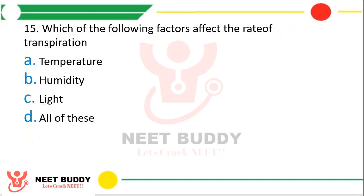Question 15: Which of the following factors affect the rate of transpiration? Option A: temperature, option B: humidity, option C: light, option D: all of these. The correct answer is option D — all of these factors have an effect on the rate of transpiration.